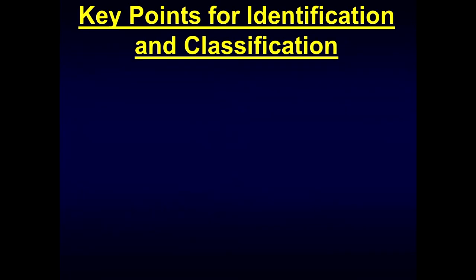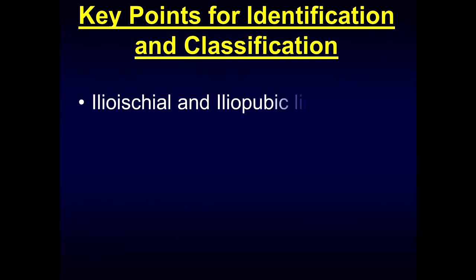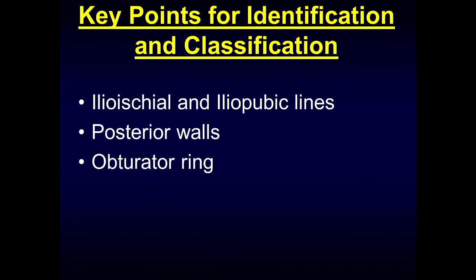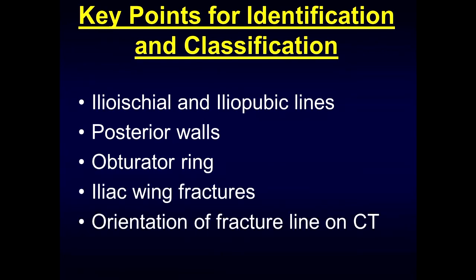Some key points for identification and classification of acetabular fractures: look at the ilio-ischial and iliopubic lines, look at the posterior walls, determine if there is involvement of the obturator ring, look for iliac wing fractures, and assess the orientation of the fracture line on CT.